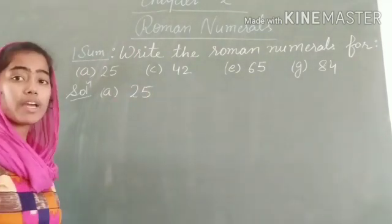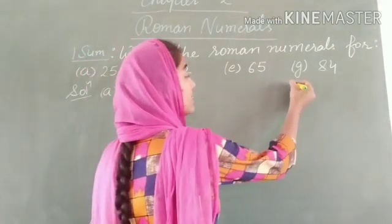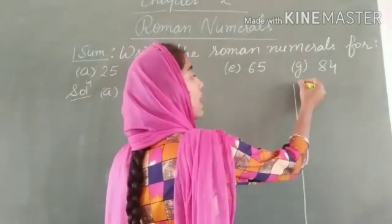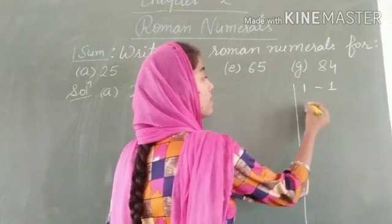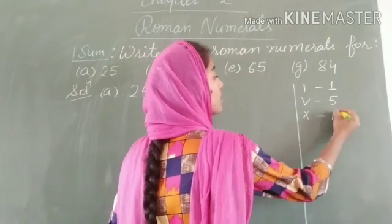the first number is 25. Before starting this question, you have to keep in mind the 7 standard digits: I stands for 1, V stands for 5, X stands for 10,